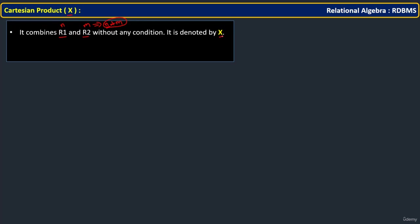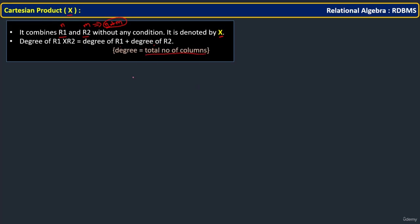That is what we represent with the cross mark. The degree of R1 cross R2 is the degree of R1 plus the degree of R2. Degree means total number of columns. For example, if R1 has five columns and R2 has three columns, then the total attributes in the result is eight attributes.